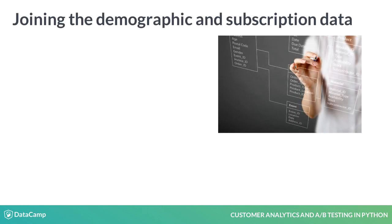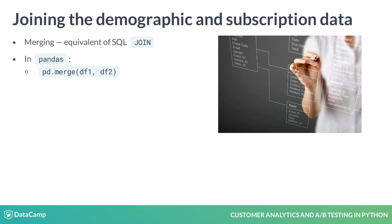To begin answering these questions, we must match our demographics data to our subscription data so that we can explore specific relationships. We will do this with the pandas merge method. This performs the equivalent of a SQL join on two data frames. There are two ways of calling this method, either as a method of pandas or as a method of a data frame object. We will only consider the latter case here, but they are equivalent.